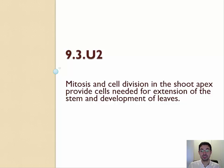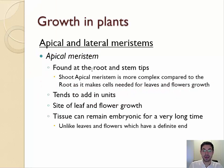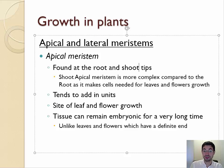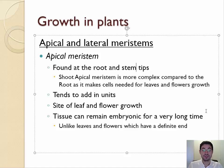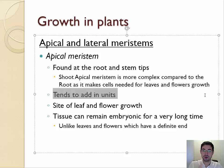Mitosis and cell division in the apex of the shoot provide cells needed for the extension of the stem and development of leaves. The apical meristem is found at root and stem tips — another word for a stem is a shoot. The shoot apical meristem is more complex than the root because it also needs to make leaves and flowers. Apical meristems tend to add in units — you can actually see this in bamboo, and I'll talk more about that in just a sec.